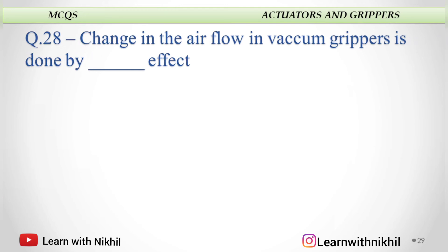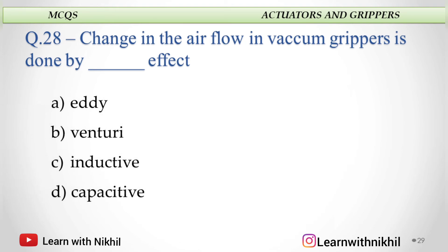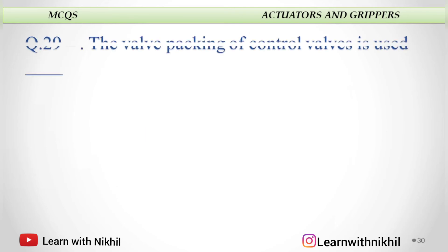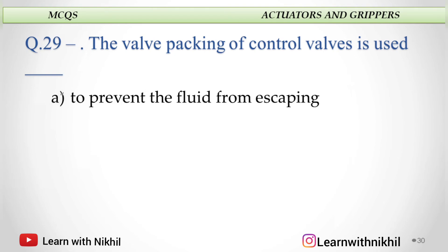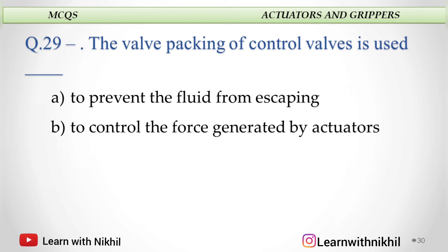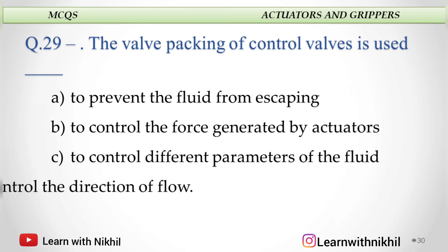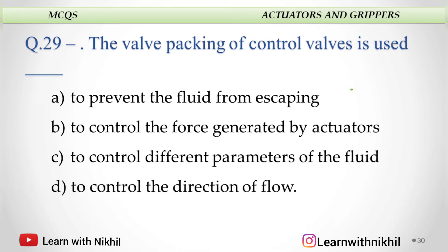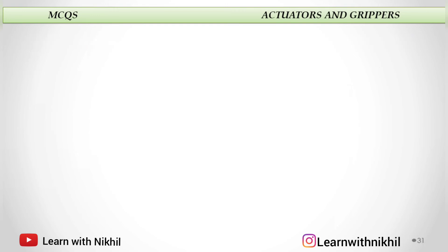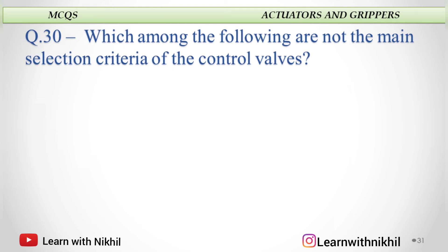Change in the air flow in vacuum grippers is done by the dash effect: A. Eddy, B. Venturi, C. Inductive, or D. Capacitive? And the answer is the Venturi effect. The valve packing of control valves is used: A. To prevent the fluid from escaping, B. To control the force generated by actuators, C. To control different parameters of the fluid, or D. To control the direction of flow? And the answer is to prevent the fluid from escaping.